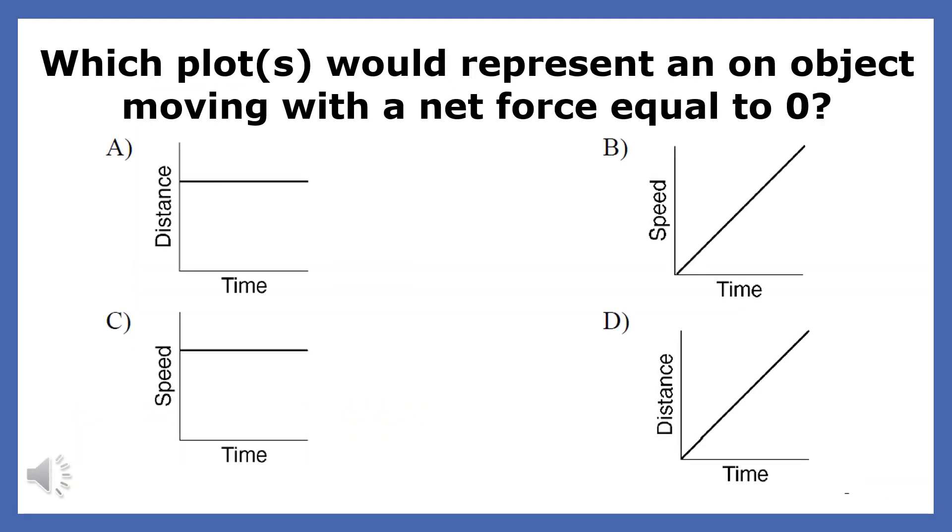Which plot would represent a body moving with a net force equal to zero? A net force of zero means the object is either at rest or moving with constant velocity. Since the body is moving, we need to pick the two graphs that show constant velocity.